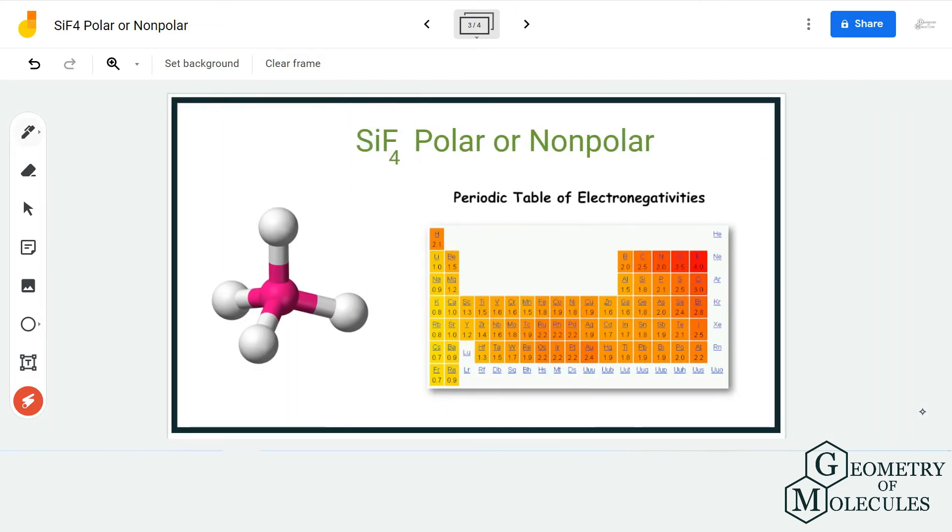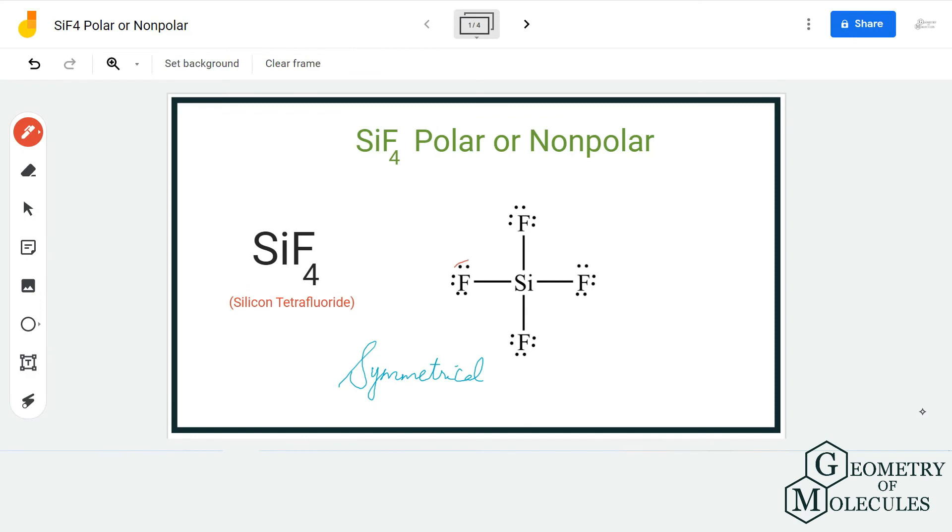Now, if you look at the electronegativity values of silicon and fluorine: for fluorine it is 4.0, as it is the most electronegative atom, and for silicon it is 1.8. The difference is much higher than 0.4, which means that the bonds between silicon and fluorine are polar. As these bonds are polar, there will